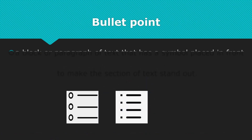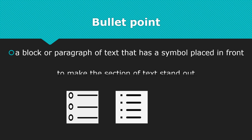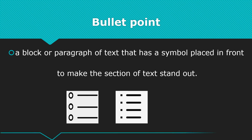Bullet point is a block or paragraph of text that has a symbol placed in front to make the section of text stand out.